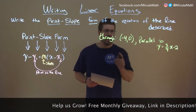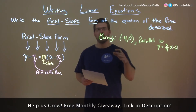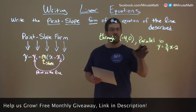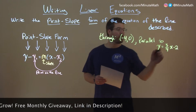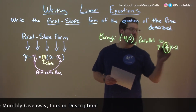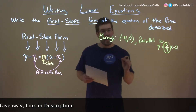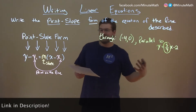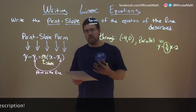Key thing here: we have a point, we need to find our slope. They tell us it's parallel to this line, so therefore they share the same slope, which is 3 fourths. We now have everything we need to write this in point-slope form.